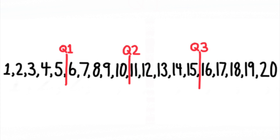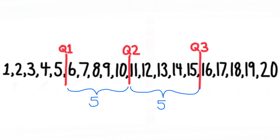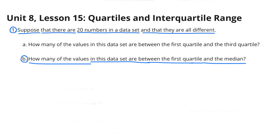I've divided them up into the three quartiles. Quartile number one falls between the five and the six. Quartile number two is the median, which is between 10 and 11, and quartile number three is between 15 and 16. If you count the values in the data set that are between the first quartile and the third quartile, you'll find that there's a total of 10 values.